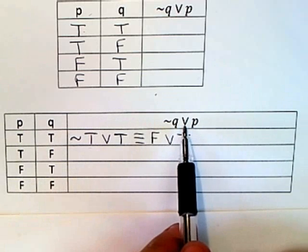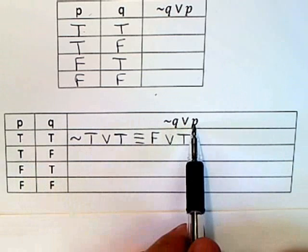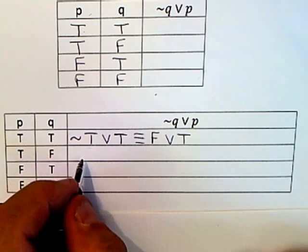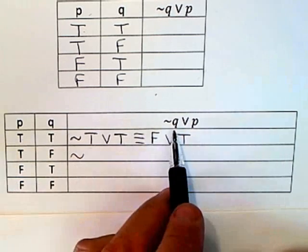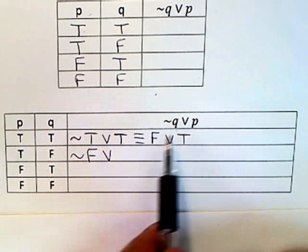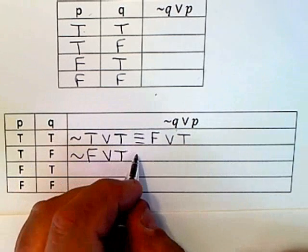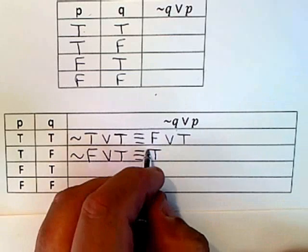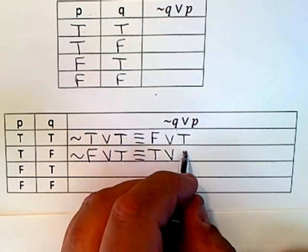I want to put a T in for P and an F in for Q. So that would give me not Q is F, not false, or, and for P I put in a T. And again that's equivalent to now not false is true, so it's true or true.